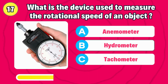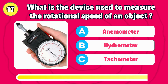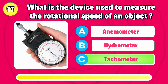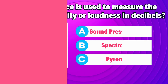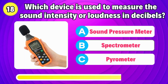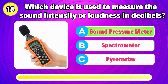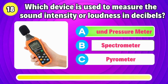What is the device used to measure the rotational speed of an object? That's right, it's tachometer. Which device is used to measure the level of sound intensity or loudness in decibels? Correct, it's sound pressure level meter.